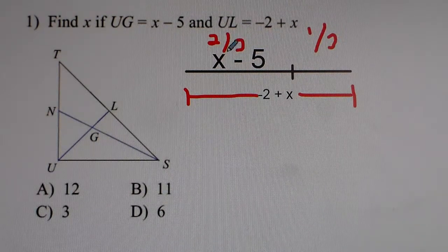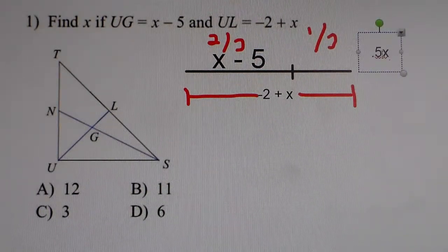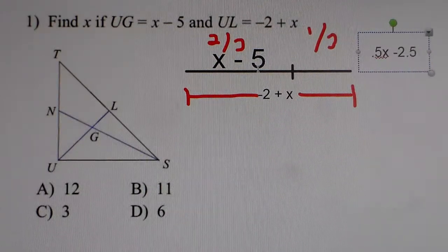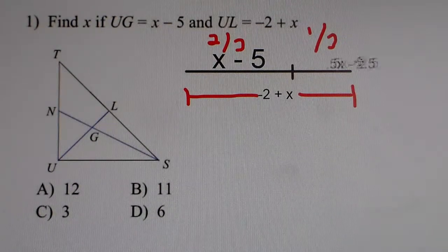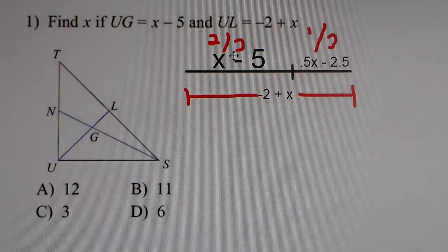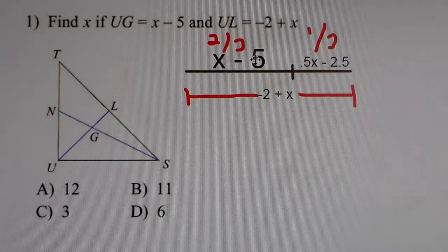To go from 2-thirds to 1-third, we just divide everything by 2. So 1x divided by 2 gets you 0.5x, and negative 5 divided by 2 is negative 2.5. That's the algebraic expression of that 1-third piece. This smaller piece is half the value of the 2-thirds piece. To make our equation, we add the x minus 5 plus the 0.5x minus 2.5, and set it equal to the big piece.